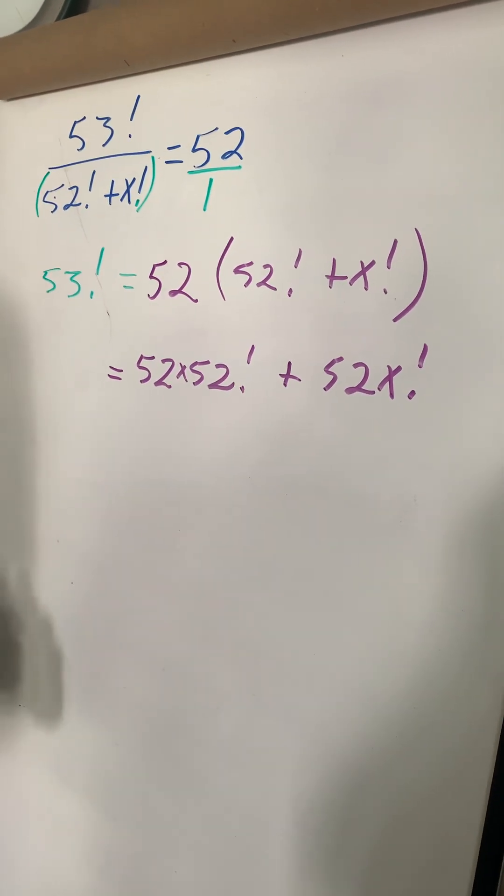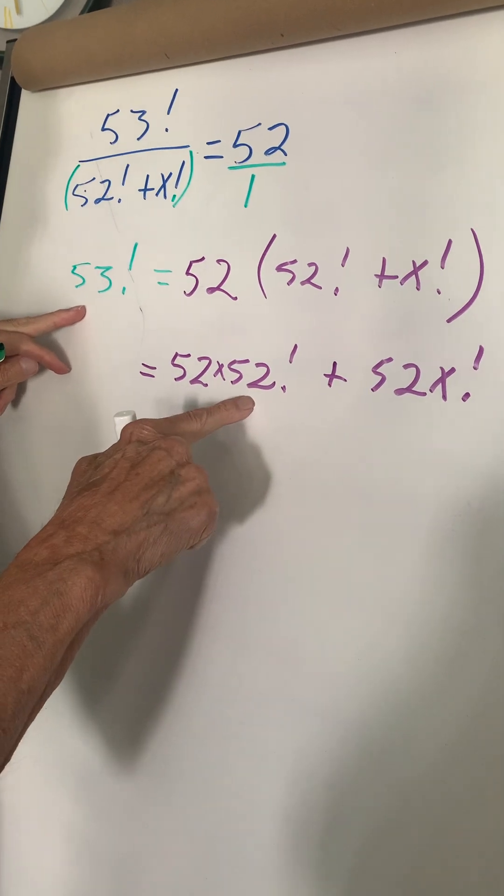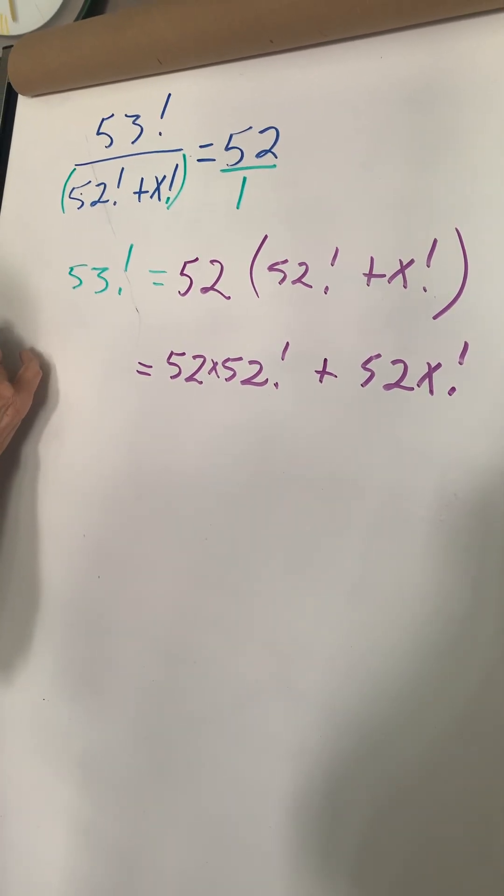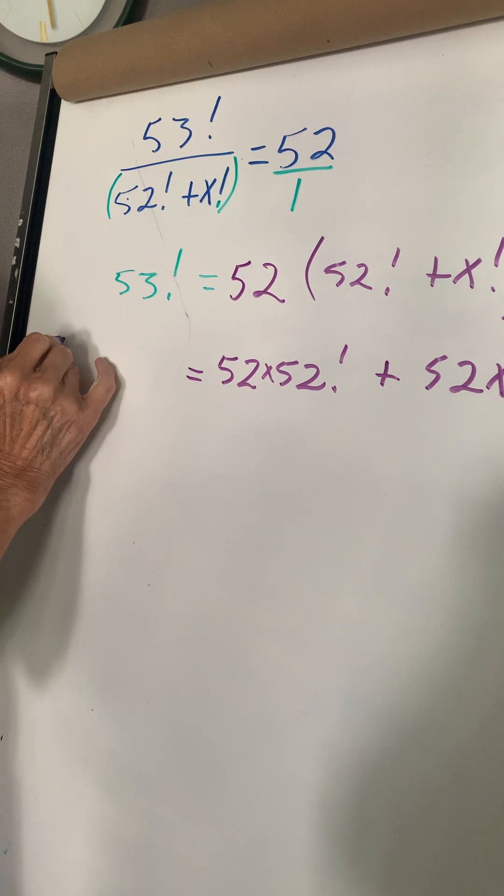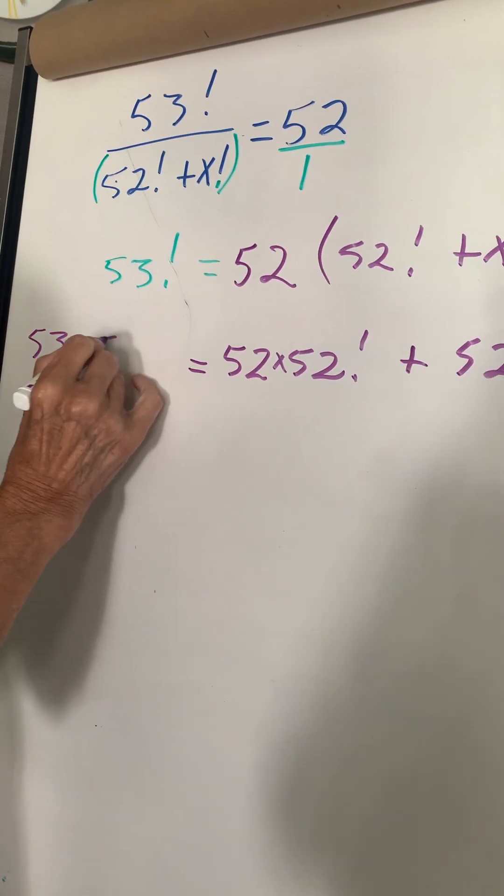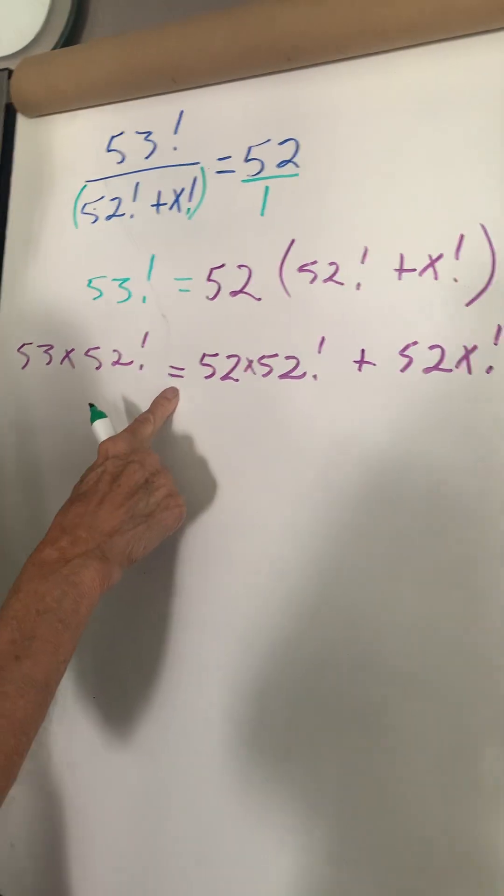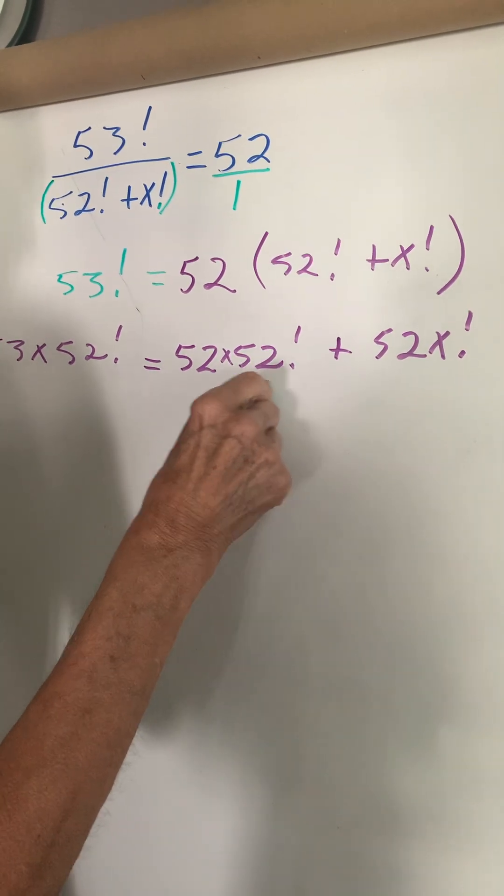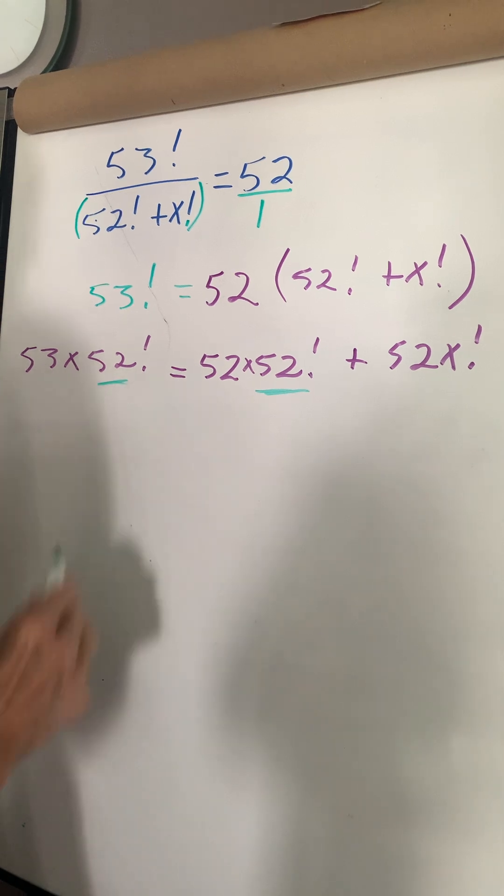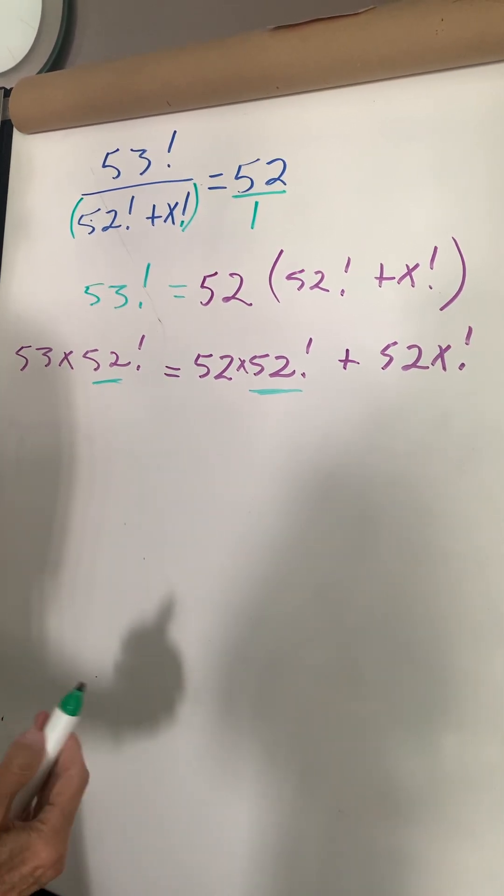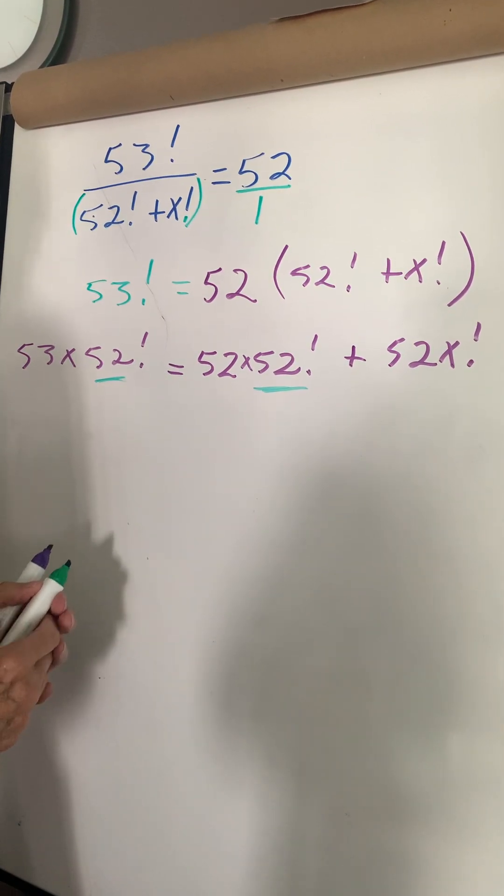Okay, we'll convert this to 52. So this becomes 53 times 52 factorial. Now I have an equal sign here, but I have 52 factorial on both sides. So I want them together.